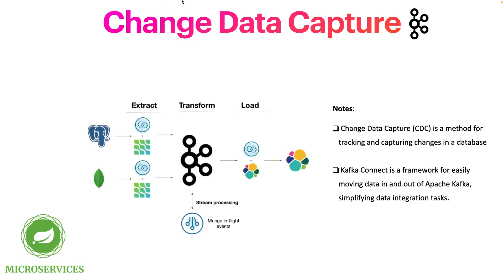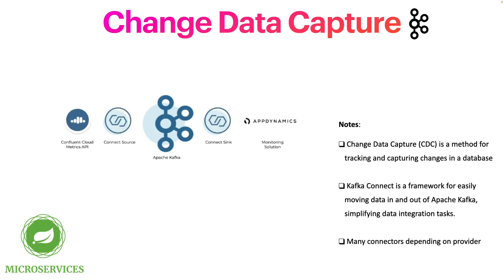We often use Change Data Capture to move data between databases or systems. Think about ETL — Extract, Transform, and Load. Let's forget about the transform for now. We can have data in Postgres, MySQL, or MongoDB, and if we want to move this data to Kafka, we can use Kafka Connect. Kafka Connect will extract data from our source system — in our case Postgres — and move this data to Apache Kafka. On the other side, Kafka Connect can also load data from Apache Kafka to other systems.